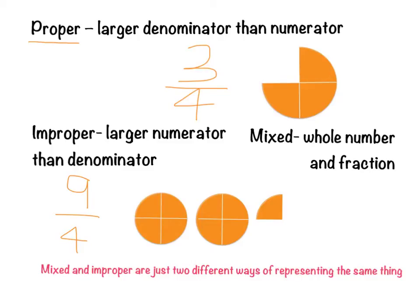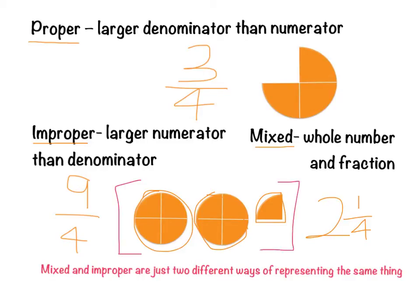Mixed numerals involve a whole number and a fraction. Using the same oranges, I could write it as two and one over four: I've got two wholes, and one over four because four parts make the whole and I've got one left over. You might notice I used the same picture for both — that's because mixed numerals and improper fractions are just two different ways of representing exactly the same thing.